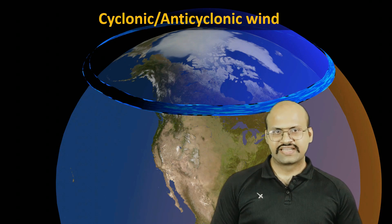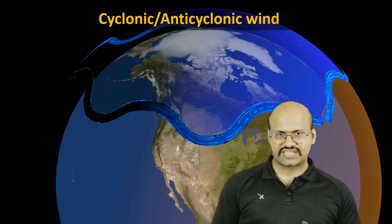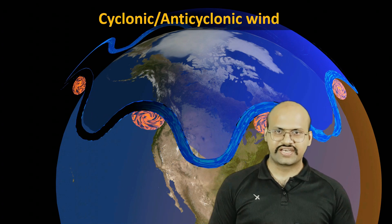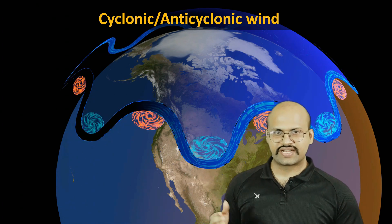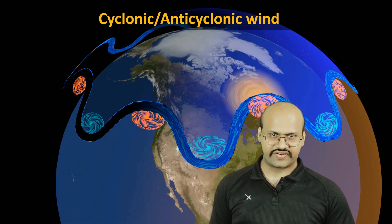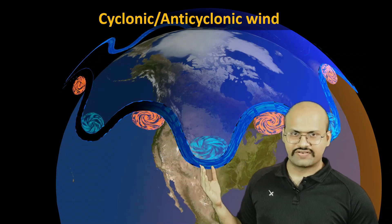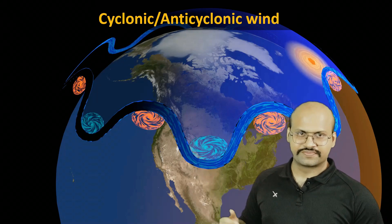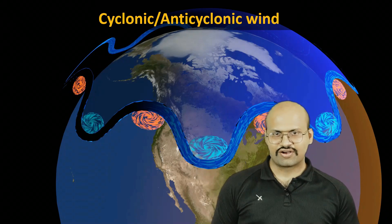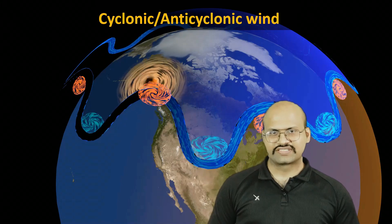Similarly, anti-cyclones can be produced from the upper part of the jet streams. When the jet stream weakens and forms loops, we can see both cyclonic and anti-cyclonic winds. The anti-cyclonic extensions produce anti-cyclones while the cyclonic portions produce cyclonic winds. This is how the jet stream induces cyclonic and anti-cyclonic winds in the atmosphere.